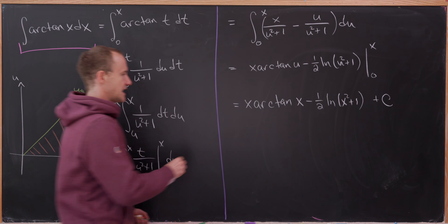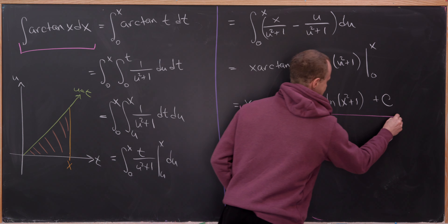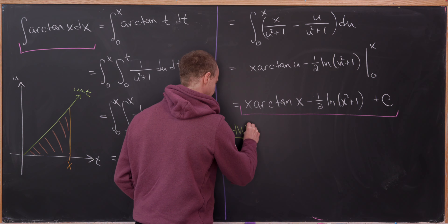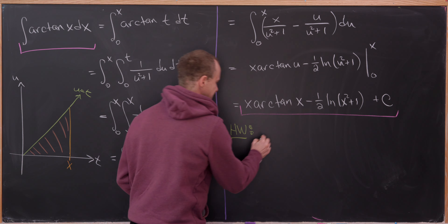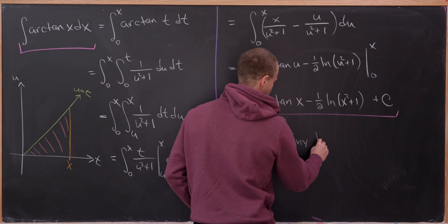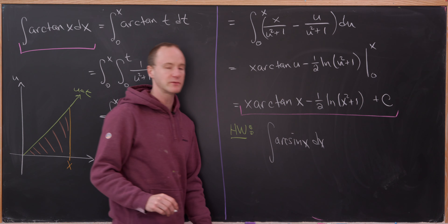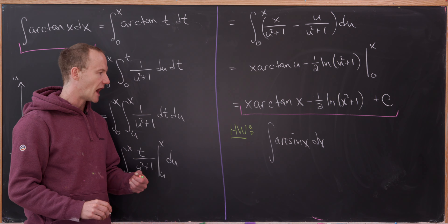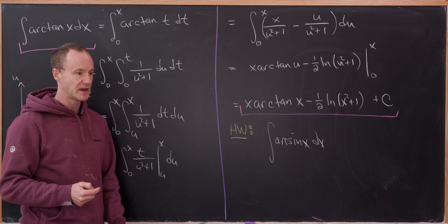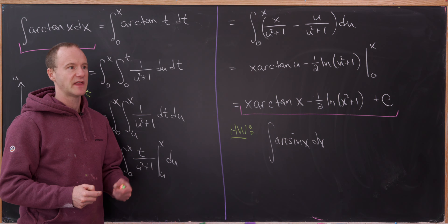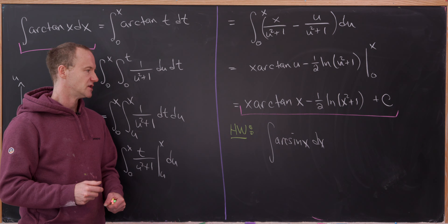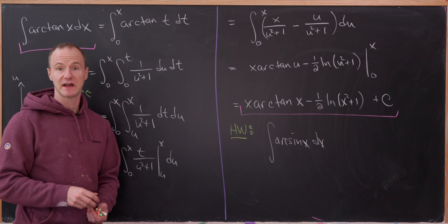So the antiderivative of arctan(x) is x·arctan(x) minus one half times the natural log of x squared plus 1, plus a constant of integration. A nice homework exercise would be to do this for the integral of arcsin(x), or other antiderivatives of inverse functions that are easily representable by integrals using this technique. And that's a good place to stop.